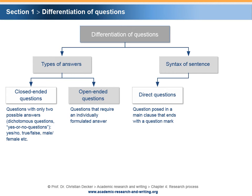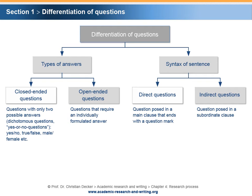Direct questions are posed in a main clause that ends with a question mark. For example, both 'have you read the book?' and 'what is the book about?' are direct questions. Indirect questions are posed in a subordinate clause that ends with a period. Examples of indirect questions are: he asked her if she has read the book, or he wanted to know what the book is about. In a research paper, the research question is always posed as an open-ended, indirect question.